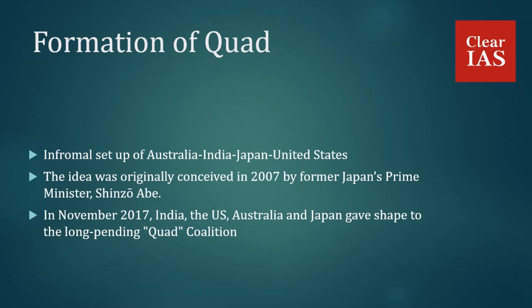In December 2012, Shinzo Abe again floated the concept of Asia's Democratic Security Diamond, involving Australia, India, Japan, and the US, to safeguard the maritime commons from the Indian Ocean to the western Pacific. In November 2017, India, the US, Australia, and Japan gave shape to the long-pending Quad coalition to develop a new strategy to keep critical sea routes in the Indo-Pacific free of any influence, especially China's.